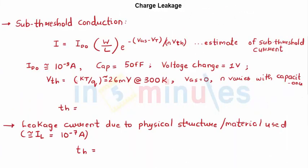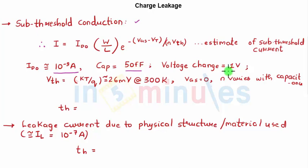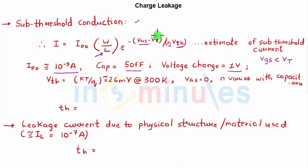Other leakage currents include subthreshold conduction current. As an estimate, it is given by: I = I_D0 · (W/L) · exp(−(V_GS − V_T) / (η · V_th)). The nominal I_D0 value is 10⁻⁹ A. Assuming C_out = 50 fF, a voltage change of 1 V, V_GS = 0 (since this flows when V_GS < V_T), W/L = 1, and V_th = 26 mV (= kT/q), the subthreshold current approximates to 10⁻⁹ A.